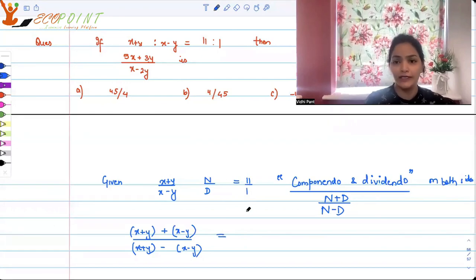So since we have x plus y upon x minus y equal to 11 upon 1, this becomes numerator is 11, denominator is 1 on the right hand side. So this becomes 12 upon 12, that is 11 plus 1, 11 plus 1 upon 11 minus 1. That is 12 upon 10. Or in other words, I can say that this is 6 upon 5, right?